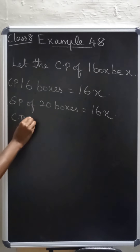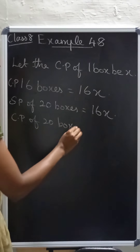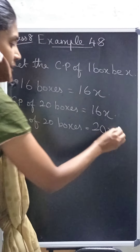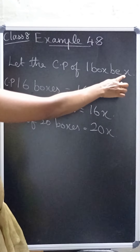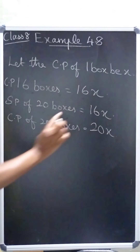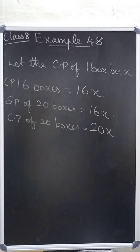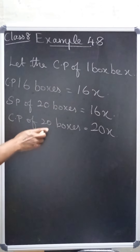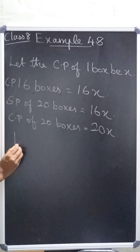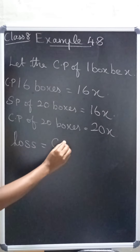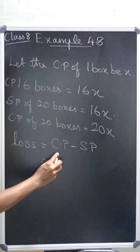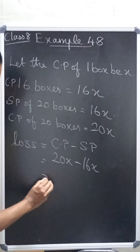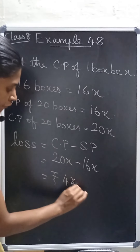Now the cost price of 20 boxes is equal to 20x. So we have cost price of 20 boxes = 20x and selling price of 20 boxes = 16x. We subtract to find the loss. Loss equals cost price minus selling price, which is 20x minus 16x, so loss equals 4x.